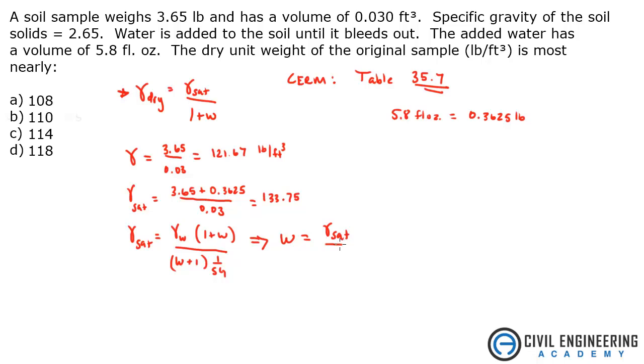So the equation looks like gamma sat divided by the density of water minus gamma sat saturated density. Just plug everything in and we'll solve for our water content.